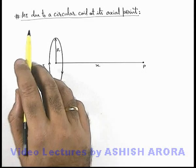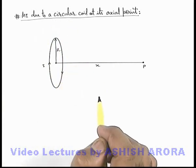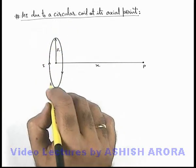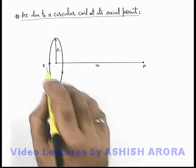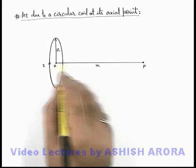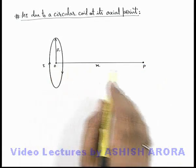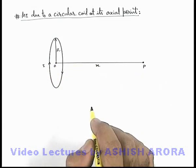Now let us calculate the magnetic induction due to a circular coil at its axial point. Here you can see this is a circular coil carrying a current i in clockwise manner, of radius r, and on its axis at a point p located at a distance x from the center of coil. We are required to find its magnetic induction.